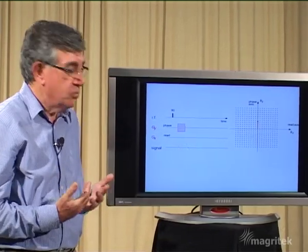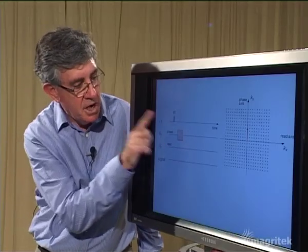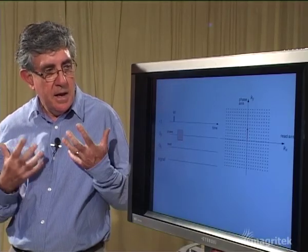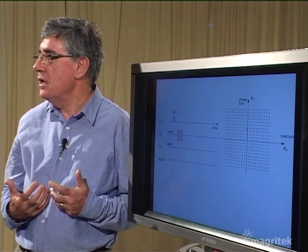Let's look at the way the pulse sequence works. We start with a 90 degree pulse. And now we're going to acquire our signal in reciprocal space, in k-space. But it's going to be two dimensions of k-space.